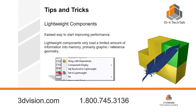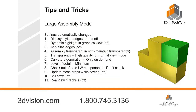Lightweight components is the easiest way to start improving assembly performance. They only load a limited amount of information into memory — it's not grabbing the entire part file, only the graphics and whatever is necessary for the assembly you're currently in. You can right-click on a file and set it to lightweight. Most people don't even notice when things are lightweight because it happens in the background; there's just a small feather icon that appears on your part icons in the feature tree.